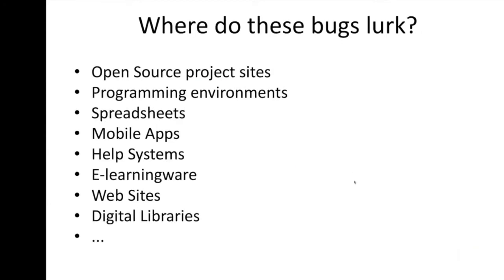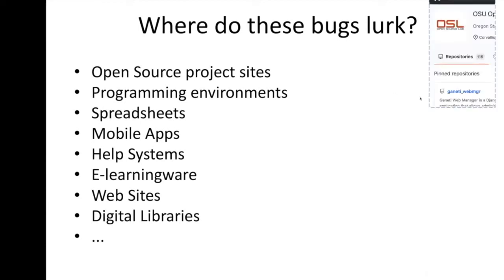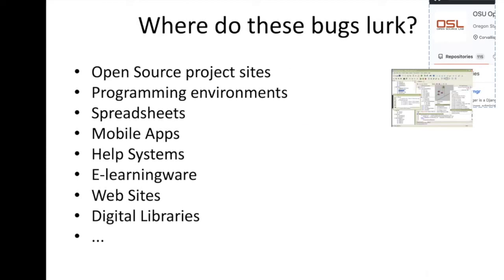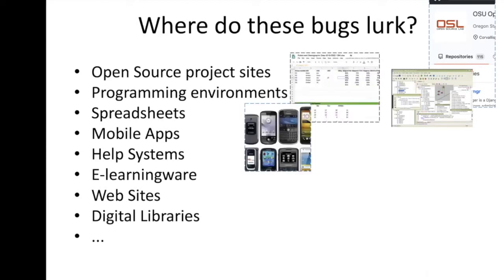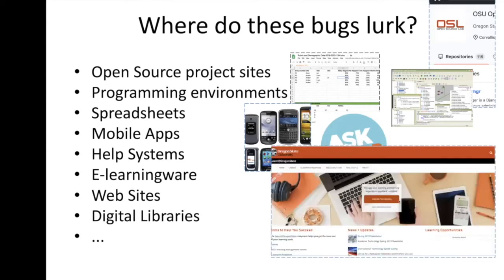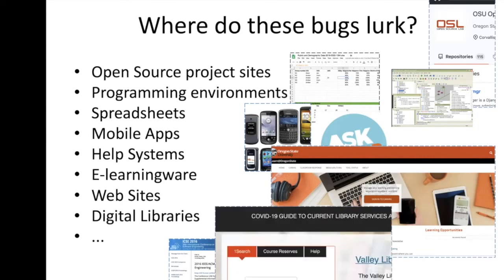So where do bugs like this lurk? Everywhere — there's a paper about all of these. Open source project sites? Yes, there are gender inclusivity bugs in the site. Programming environments? Yes, in the environment itself, in the toolware. Spreadsheets? You bet. Mobile apps? All over the place. Even help systems — think information processing style; these things are ripe for gender bias bugs if you do them wrong. E-learning ware, like Canvas, which we use at OSU — you're going to get to know a lot about the problems with Canvas very shortly. Websites? Yes, it works for any technology, not just apps. Even plain old websites have lots of these inclusivity bugs. Digital libraries? Oh yes. In other words, they're everywhere, and there are papers about all of these and more.